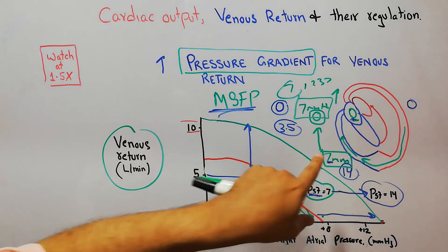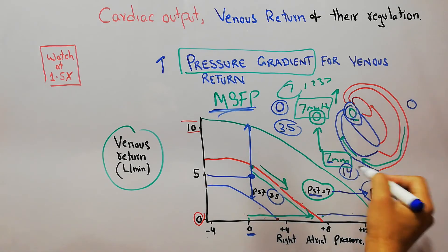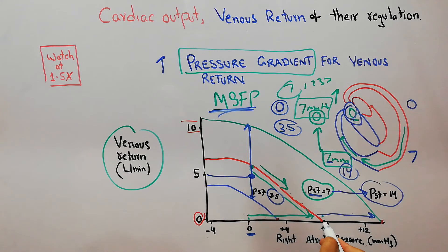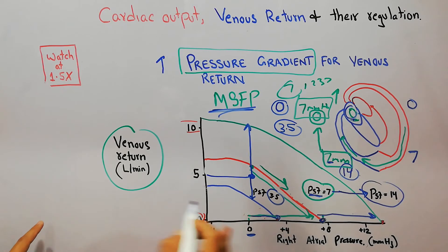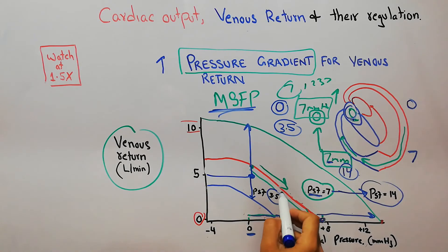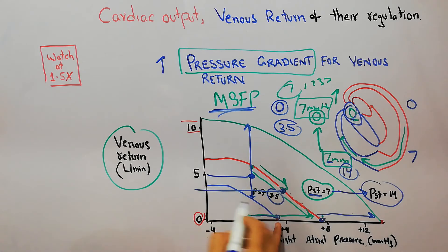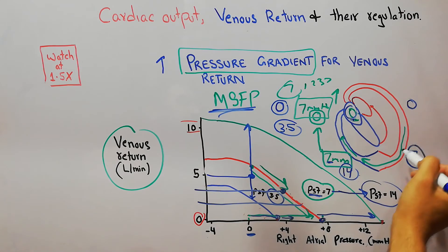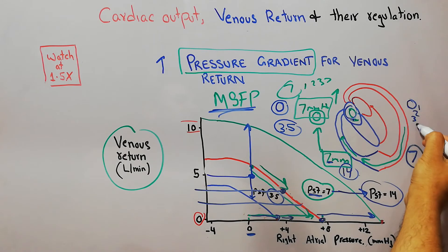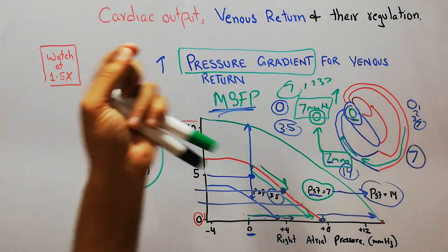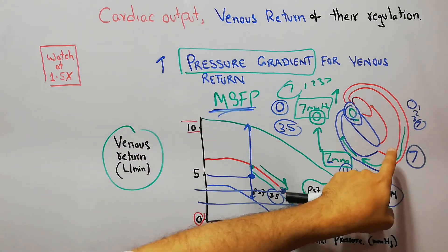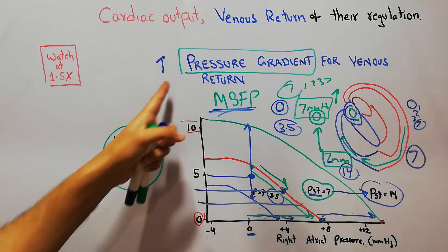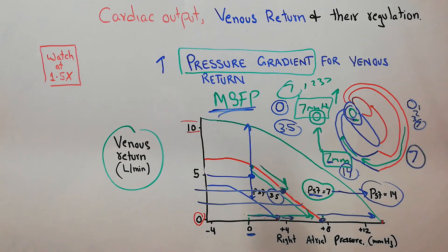The gradient can also change when there is a change in right atrial pressure. If the mean systemic filling pressure remains the same but the right atrial pressure increases, there will be a decrease in venous return. If RAP increases further toward 7 mmHg, venous return decreases more, until the gradient altogether finishes and there is no return of blood flow.